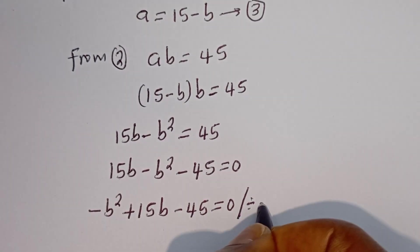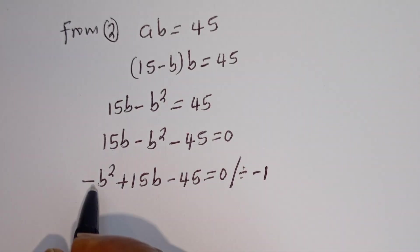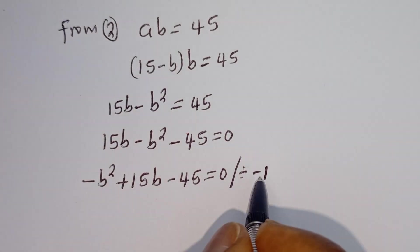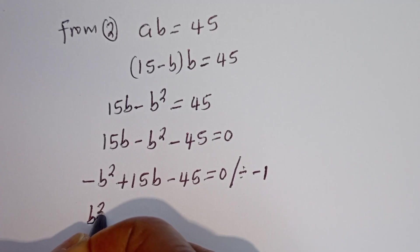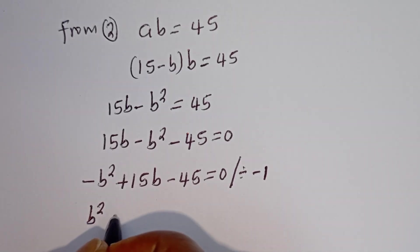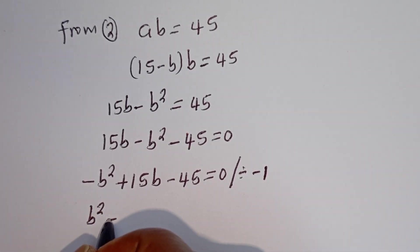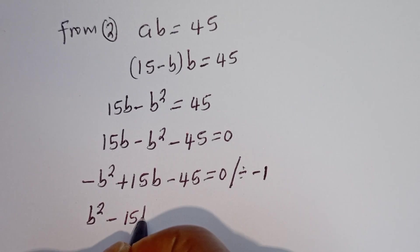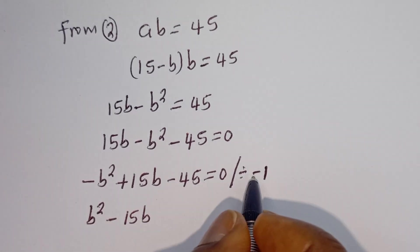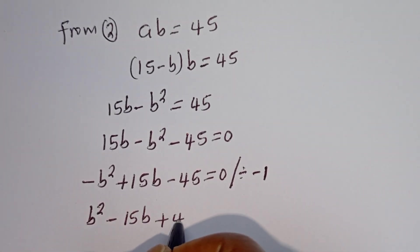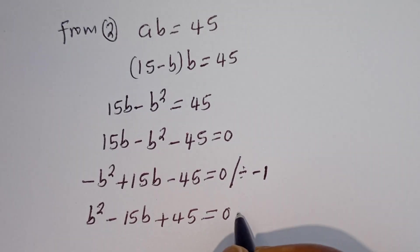Let's divide all through by minus 1. Minus B squared divided by minus 1 is B squared. Plus 15B divided by minus 1 is minus 15B. Minus 45 divided by minus 1 is plus 45. So we have B squared minus 15B plus 45 is equal to 0.